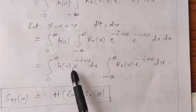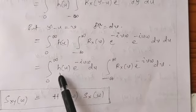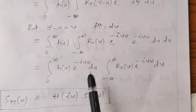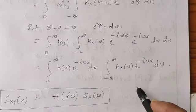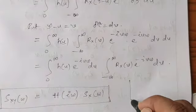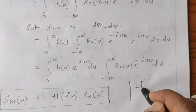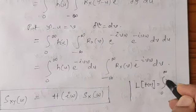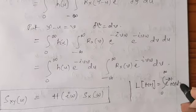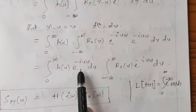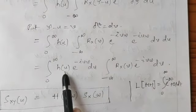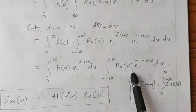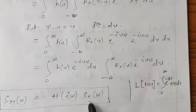This gives us the integral from 0 to infinity of H(U) · e^(minus i·U·omega) dU — which is the Laplace transform of H(U) evaluated at s = i·omega, that is H(i·omega) — multiplied by the integral from minus infinity to plus infinity of Rx(V) · e^(minus i·V·omega) dV, which is the Fourier transformation of Rx, that is Sx of omega. Therefore, Sxy of omega equals H(i·omega) · Sx(omega).